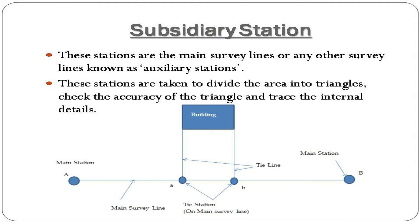Subsidiary stations are on the main survey lines or any other survey lines and are known as auxiliary stations. These stations are taken to divide the area into triangles, check the accuracy of the triangle, and trace the internal details.